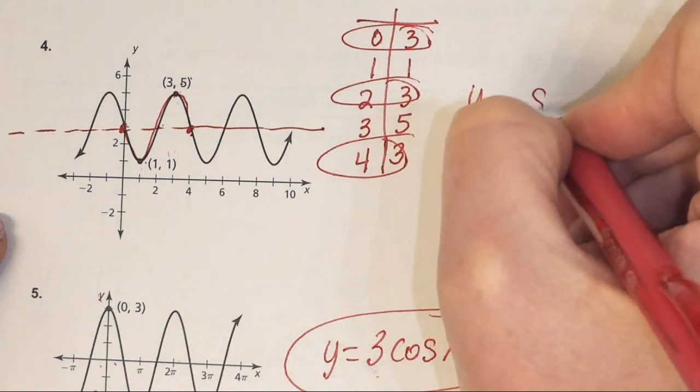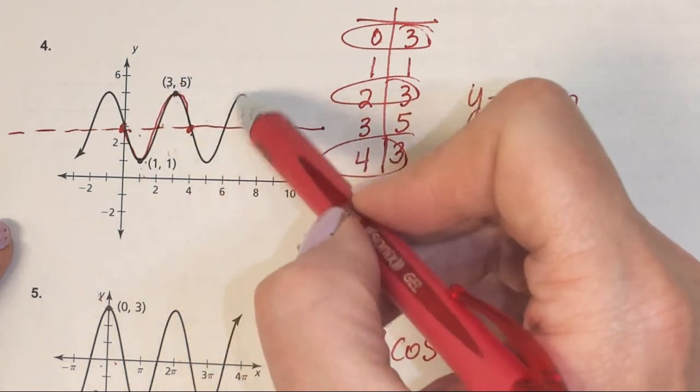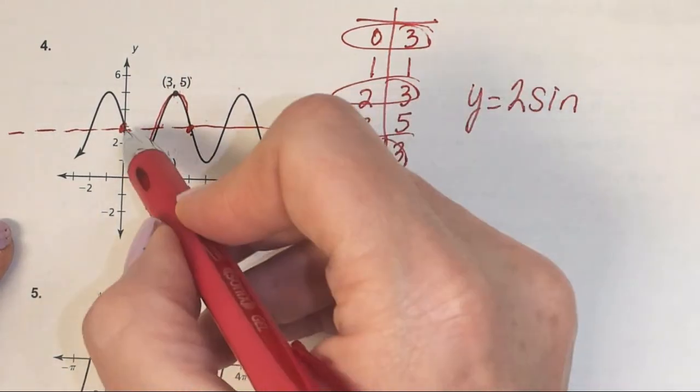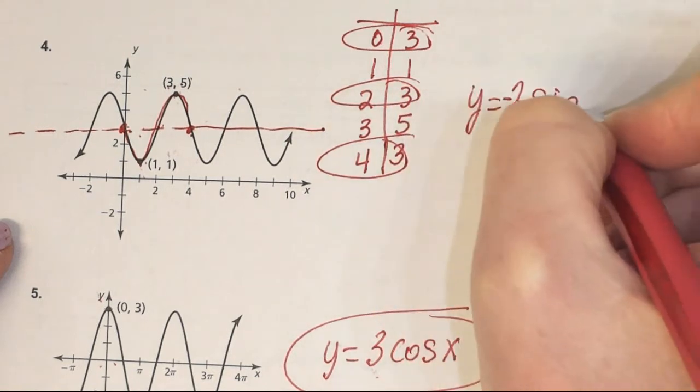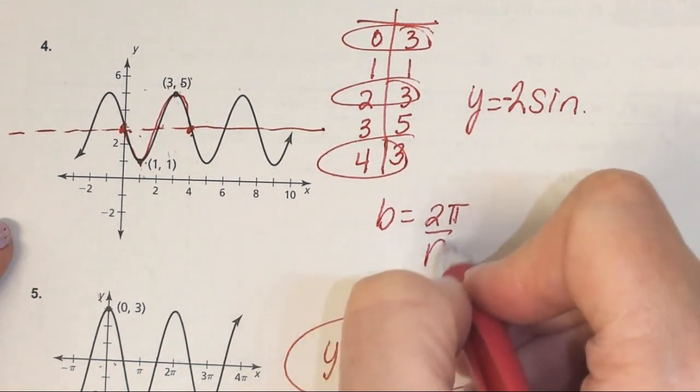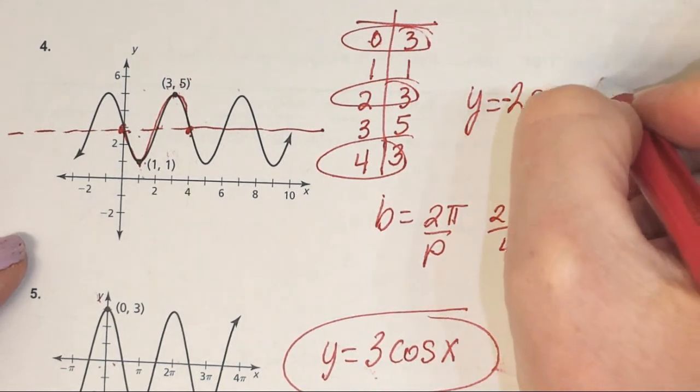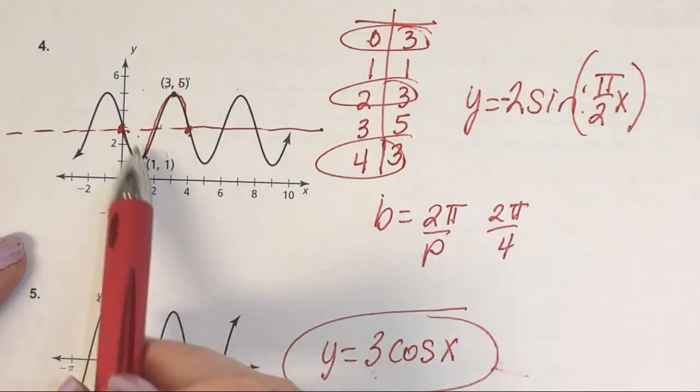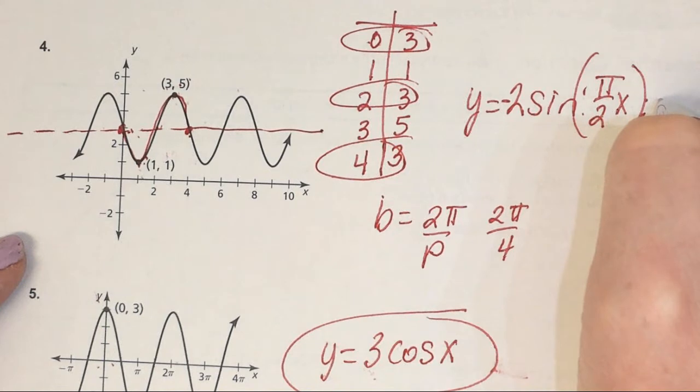What's that tell me it's going to be? Sine. So y = sine. The amplitude is how far it is off the sinusoidal axis, that vertical stretch. What is that? 2. But for sine curve, it's supposed to go up first, not down first. So I need a negative in front. B is 2π divided by the period. The period is 4. So 2π over 4 is π/2. Then I have x. My shift up is 3. So y = -2sin(π/2 x) + 3.